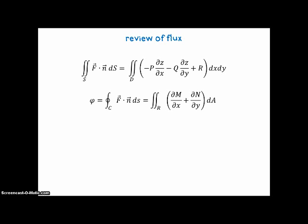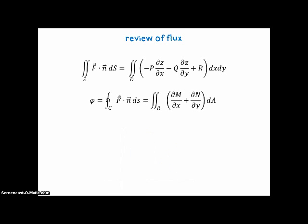Now, in two dimensions, flux is measured through a closed curve, the same integrand except it's ds, the change along the curve, rather than the change along the surface. And that also could be evaluated as a double integral over the region that that closed curve bounded using that integrand. So there's a picture of a possible closed curve where the region would be easier to integrate over than the curve. Now, with the help of the divergence theorem, we're going to move to a closed surface and then have an integral to help us with the flux through that closed surface.